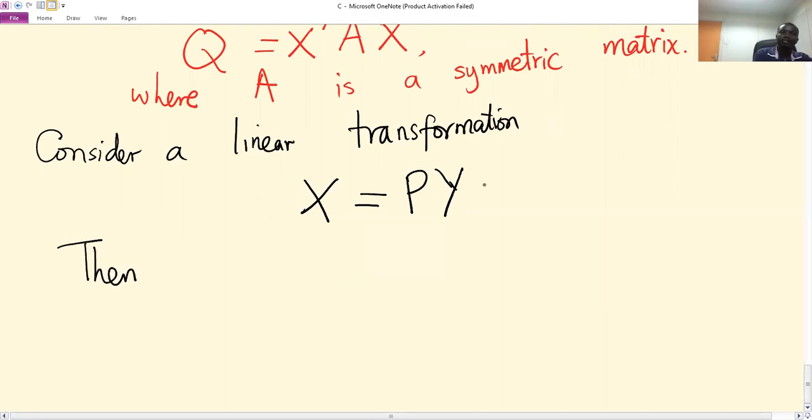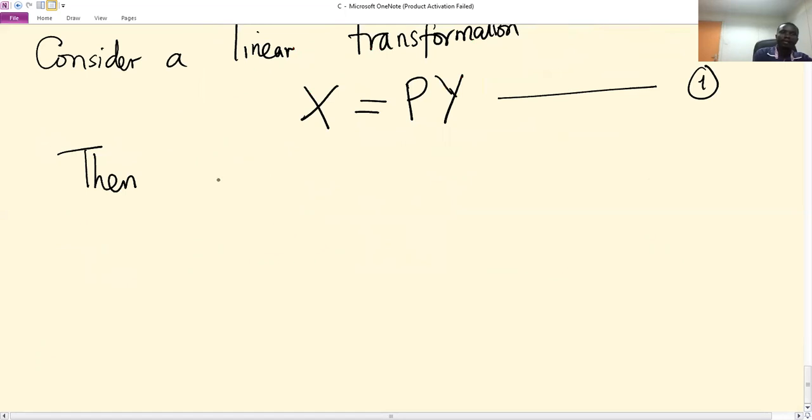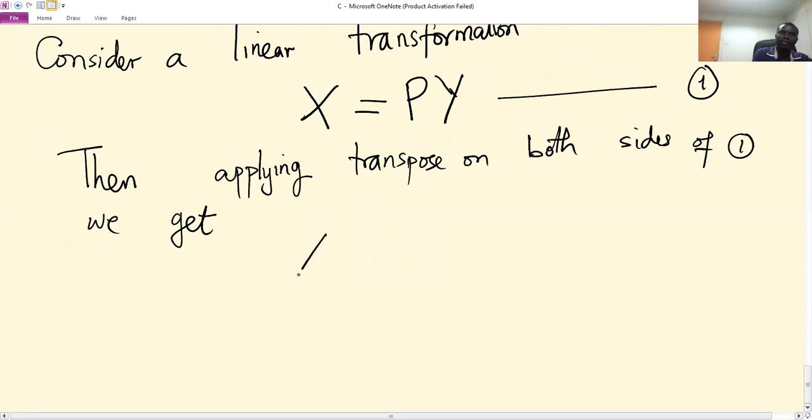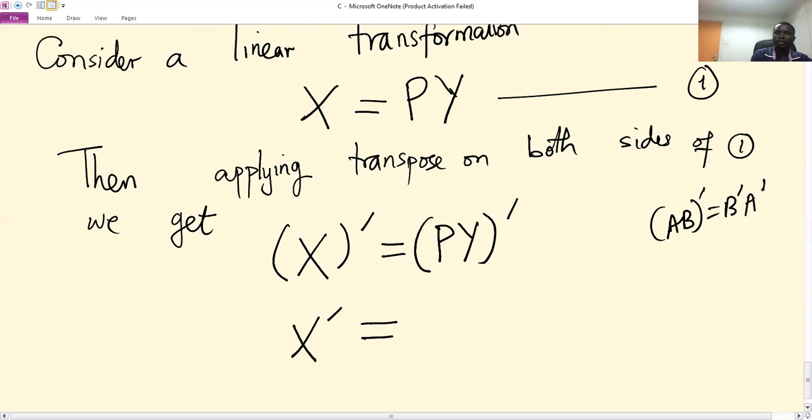Then, applying transpose on both sides of equation 1, we get (x)' = (Py)', which equals y'P' by the transpose property (AB)' = B'A'.